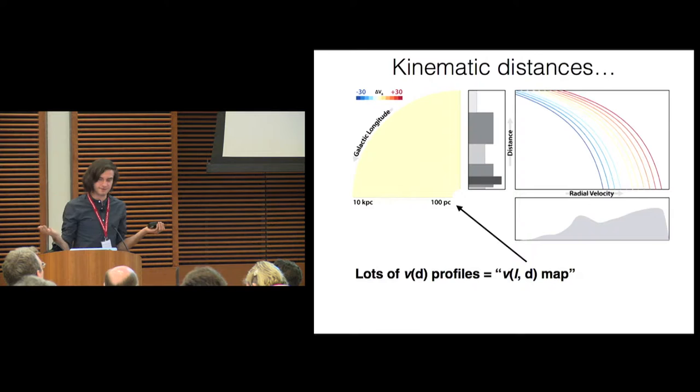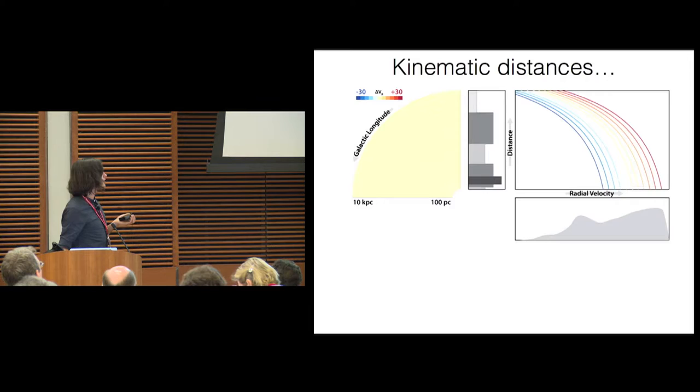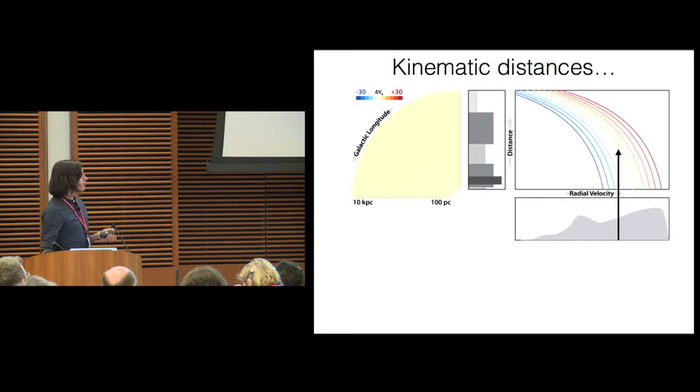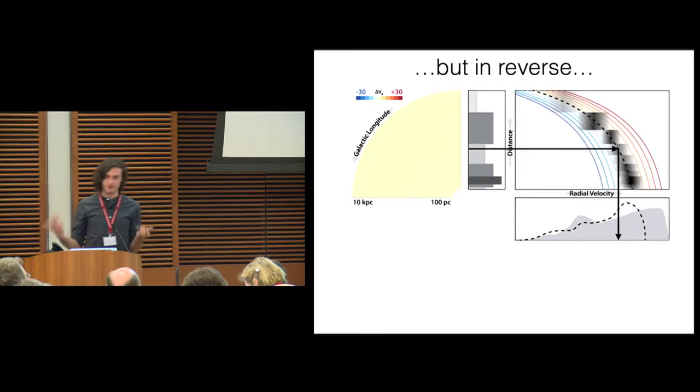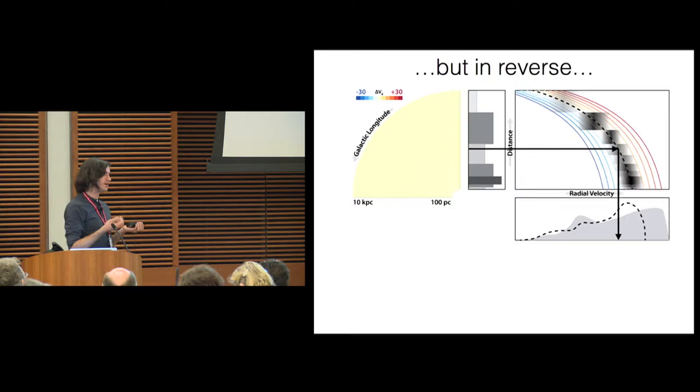And I'm also going to make an extremely simplifying assumption, scale that as well, and pretend that that tells me where matter is in three dimensions, in position, position, distance. And now you take these two ingredients and you do something clever. So now I'm going to show a cartoon explaining exactly what it is that I do to combine these things. So we're going to start with the 3D ingredients. Here's a cartoon of a slice from a position, position, distance map. We're going to take a single sight line. And we're going to take the ISM as a function of distance profile out of the position, position, distance map, and the corresponding ISM as a function of velocity profile from the position, position, velocity map. And then we're going to come up with a way to combine them. And the way that we combine them can be summarized in three lines as kinematic distances, but in reverse and more flexible.